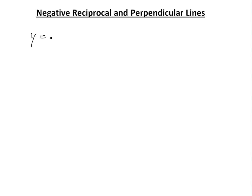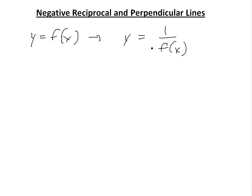Basically, a reciprocal — if you have y equals f of x, then the reciprocal is basically y equals 1 over f of x. That's a reciprocal, but if it's a negative reciprocal, you just add a negative.